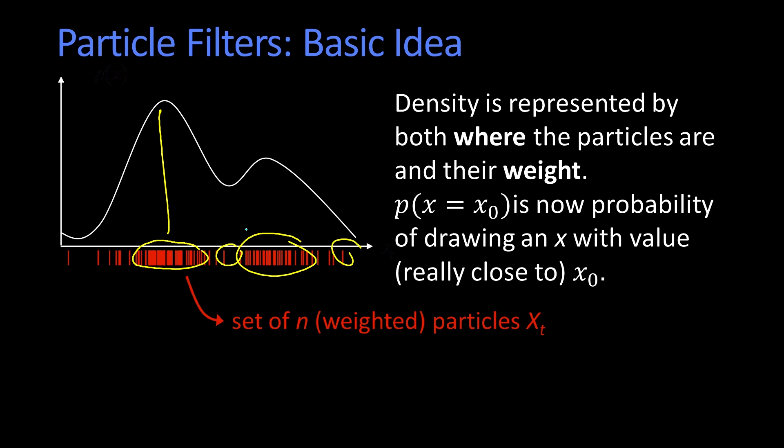And if they were weighted, you can think of that as having two particles in the same spot. If I double the weight, it would be like having two particles at the same spot. And now you can say that the probability density that x is some value is essentially the probability if you were to draw out a particle that you would get a particle whose value was really close to that spot. And that's what it means to use samples or particles to represent a particular density.